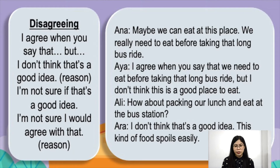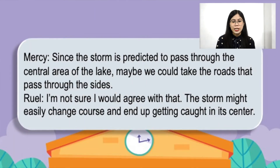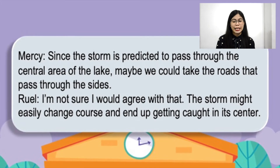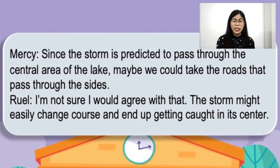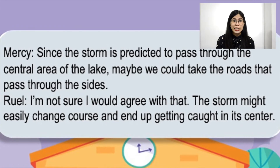We also have here some sample disagreement dialogues. Anna says, 'Maybe we can eat at this place. We really need to eat before taking that long bus ride.' Aya replies, 'I agree when you say that we need to eat before taking that long bus ride, but I would not think this is a good place to eat.' Ali suggests, 'How about packing our lunch and eating at the bus station?' Aya responds, 'I don't think that's a good idea. This kind of food spoils easily.' In another dialogue, Mercy suggests taking roads through the sides of the lake to avoid the storm. The other person says, 'I'm not sure I would agree with that. The storm might easily change course and we could end up caught in its center.' As you can see, the conversation expresses disagreement in a way that will not offend the listener.